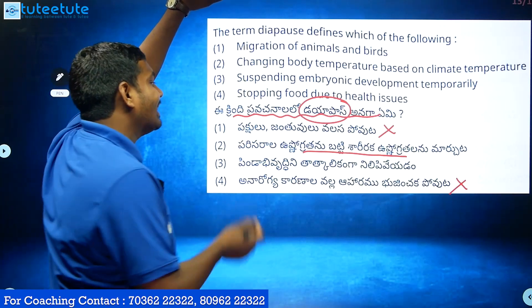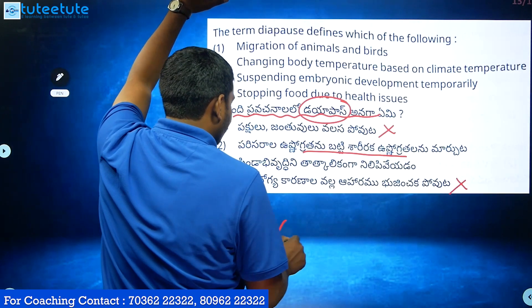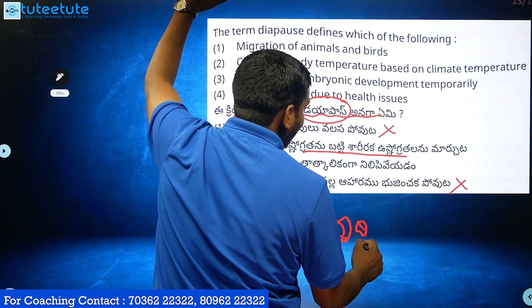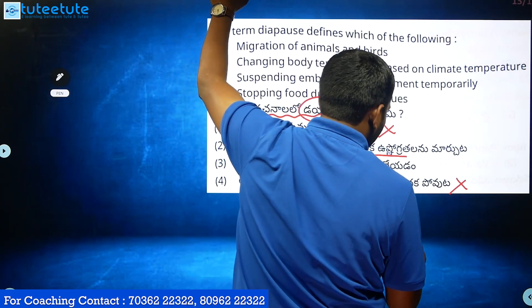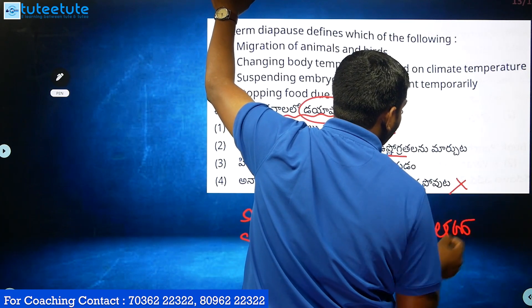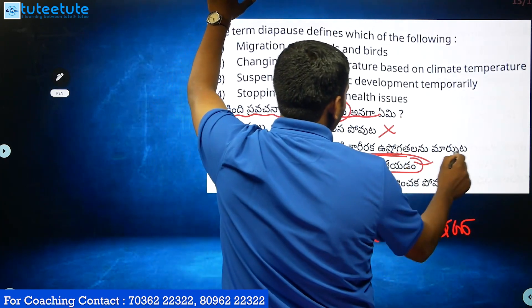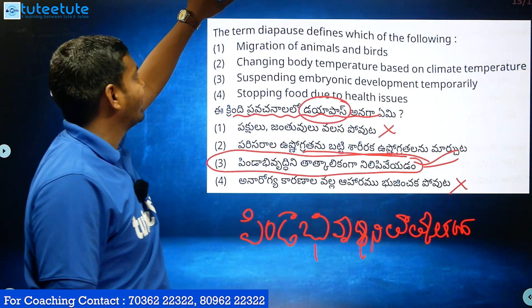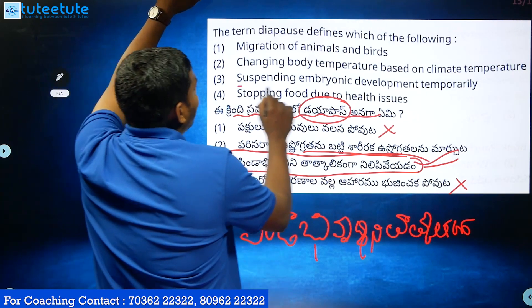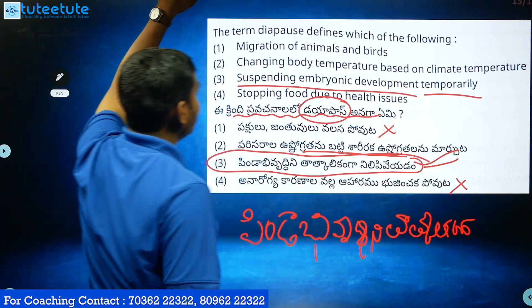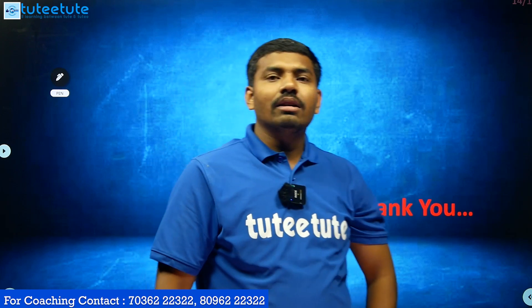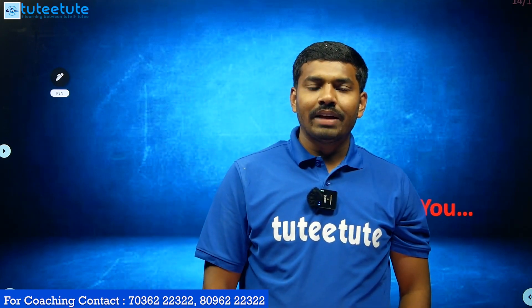Diapause is used to raise or suspend development. The term diapause defines suspending embryonic development temporarily. These are the biology questions from the session. Thank you.